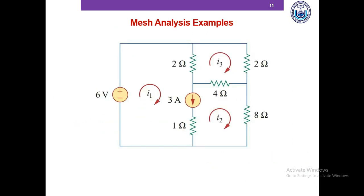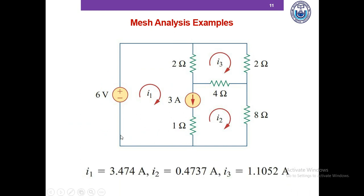Here's another problem — please pause this video and then we'll match our answers. We imagine that this 3A current source and this 1-ohm resistor in series do not exist. Our supermesh consists of this 6V voltage source, this 2-ohm resistor, this 4-ohm resistor, and this 8-ohm resistor. We write the KVL of this supermesh as usual.